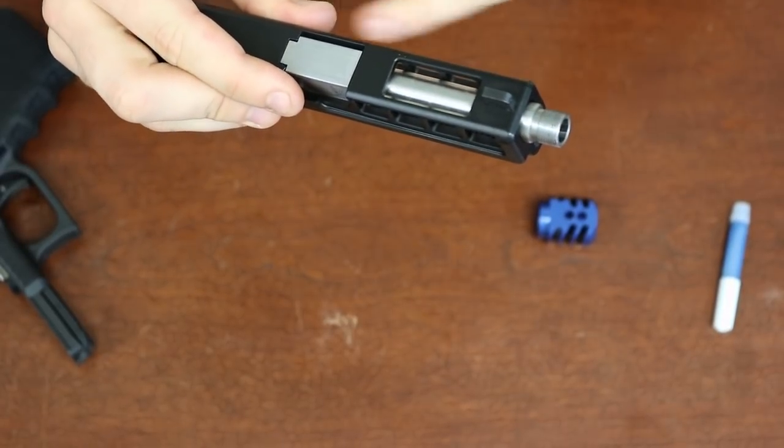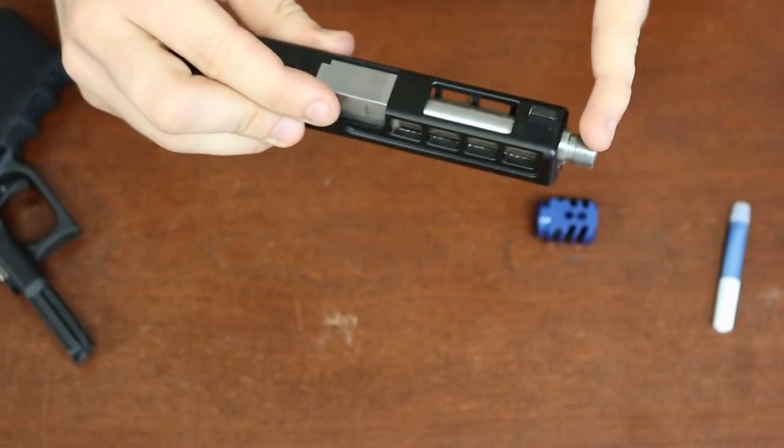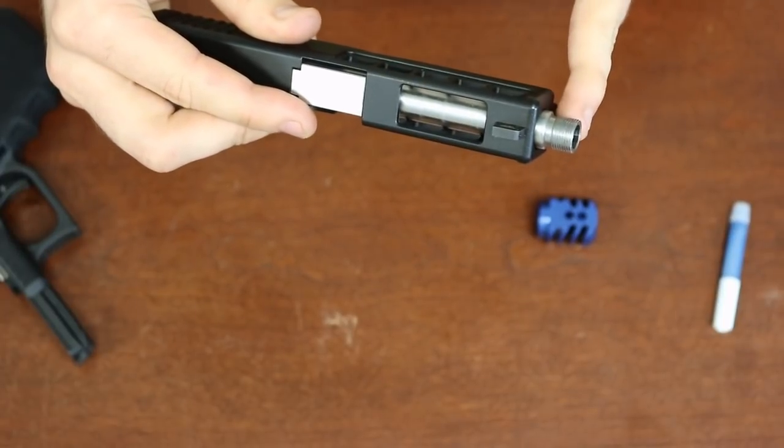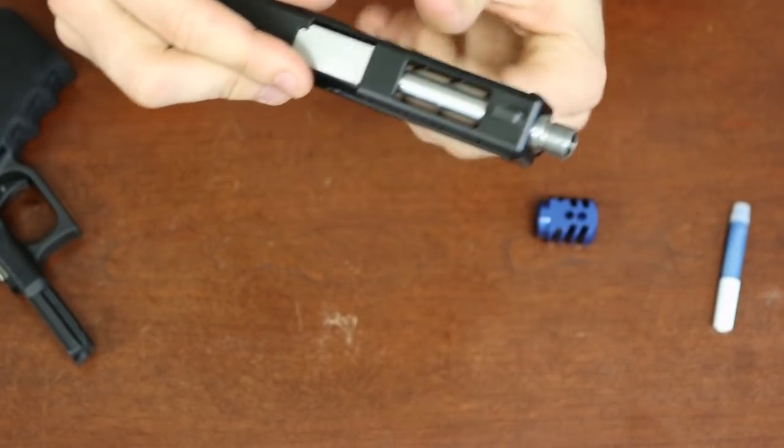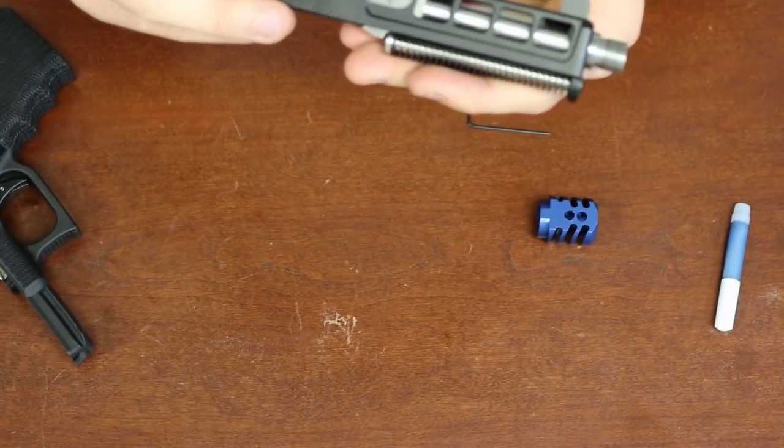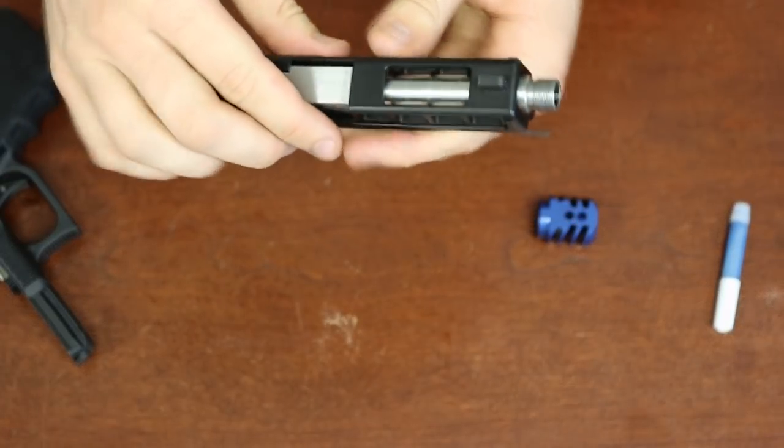Before doing this, we already cleaned the threads, but you will want to do a quick cleaning of the threads on your barrel just to ensure that there's nothing in there like oils or carbon that's going to keep the Loctite from working.